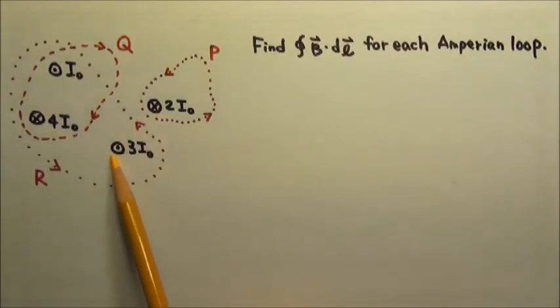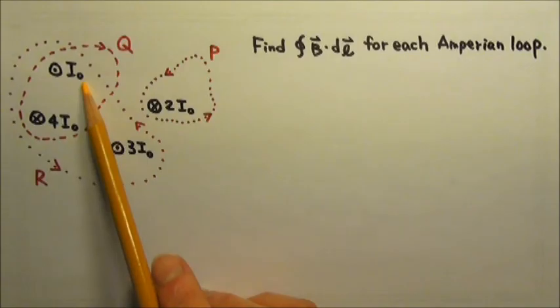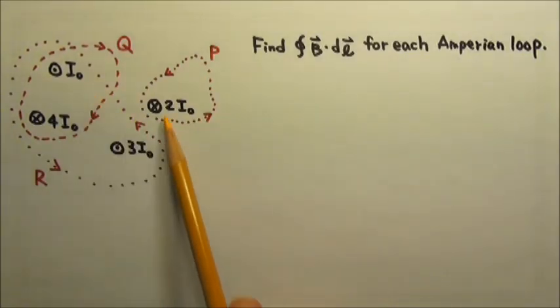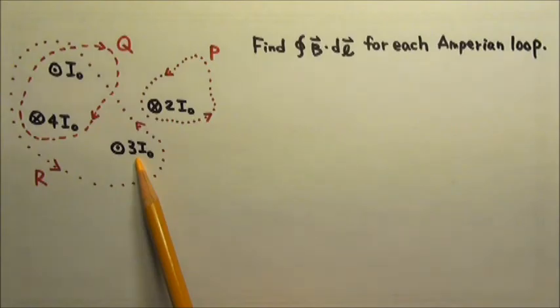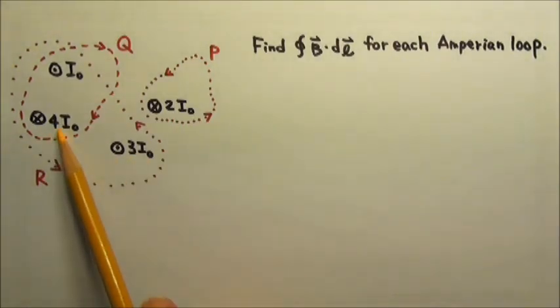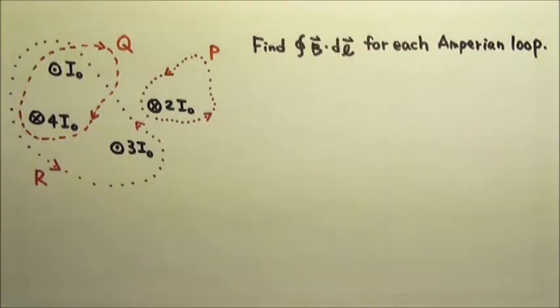There are four different electric currents: I₀ goes out of the page, 2I₀ goes into the page, 3I₀ goes out of the page, and 4I₀ goes into the page. There are also three closed Amperian loops: P, Q, and R.